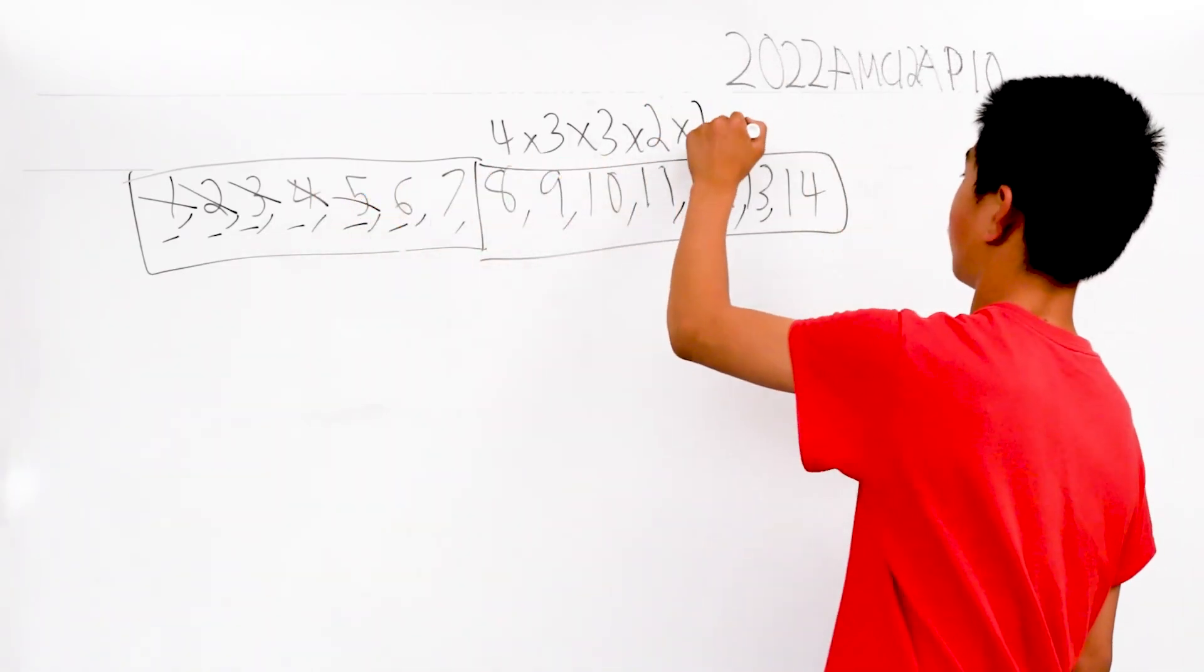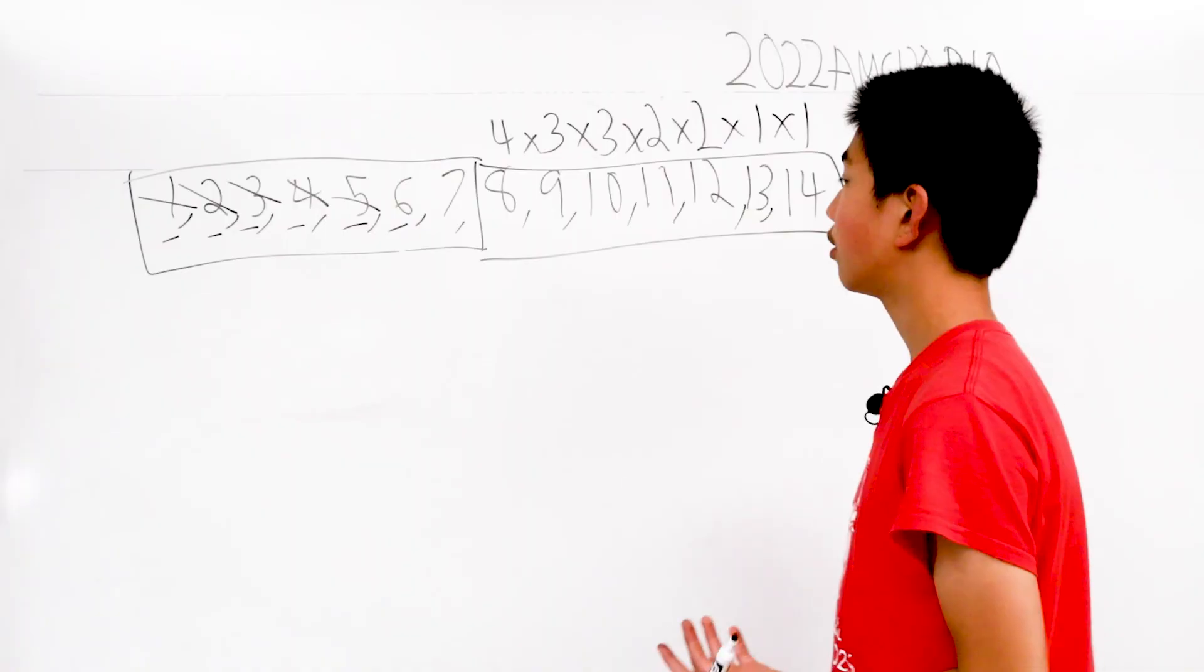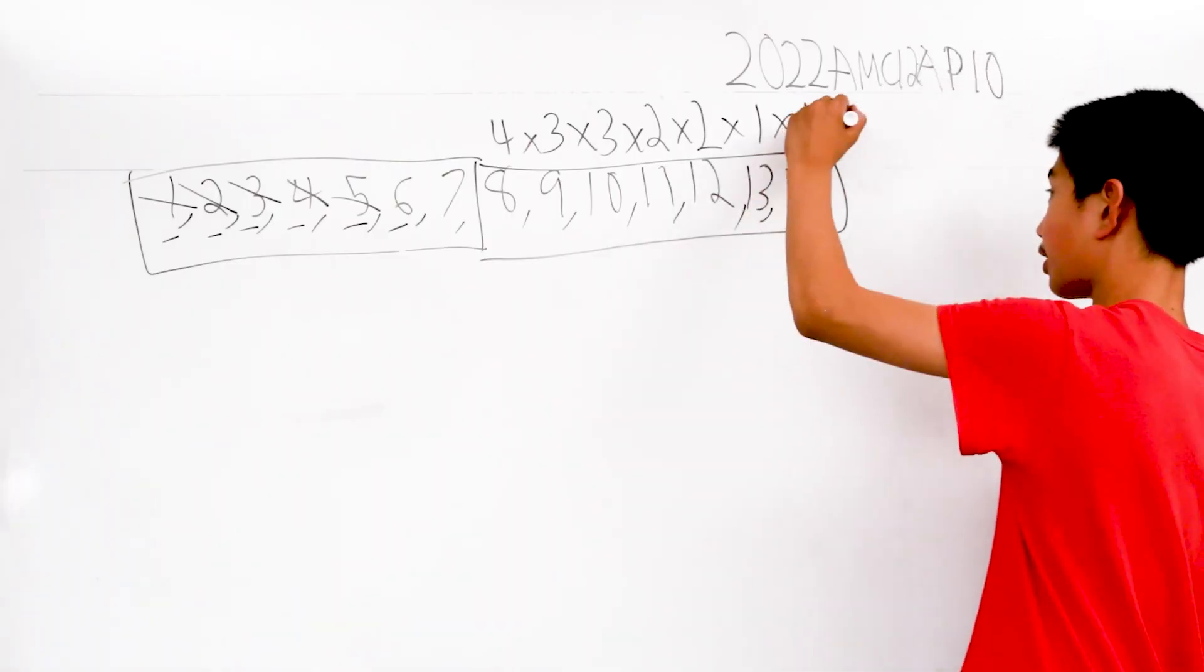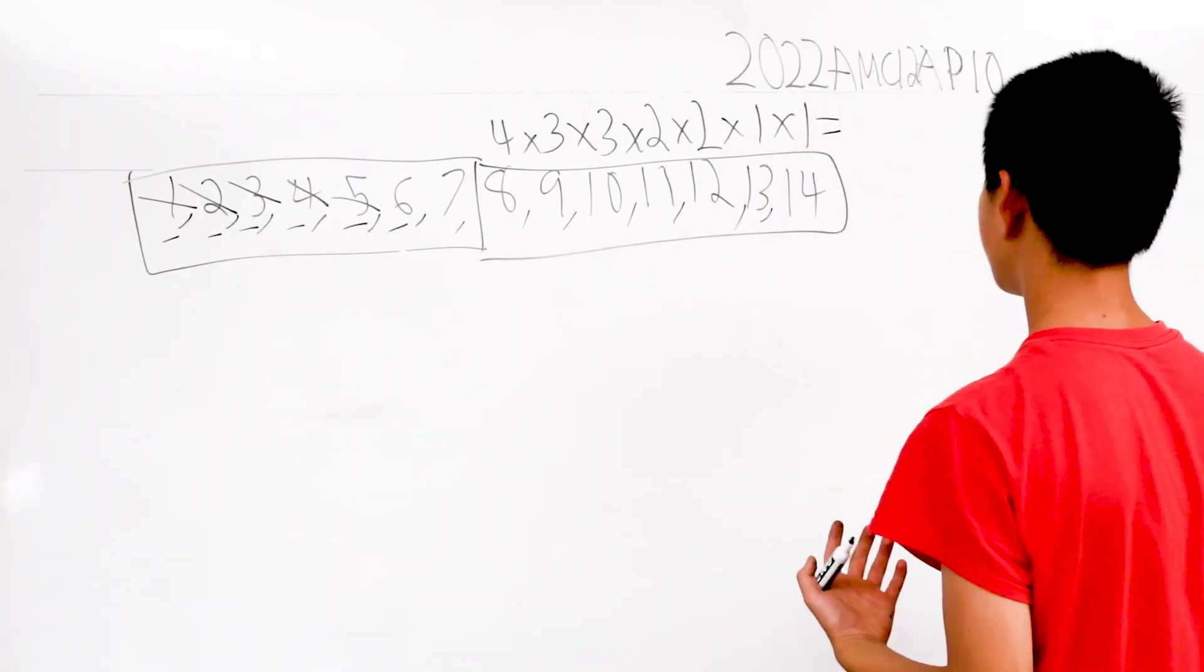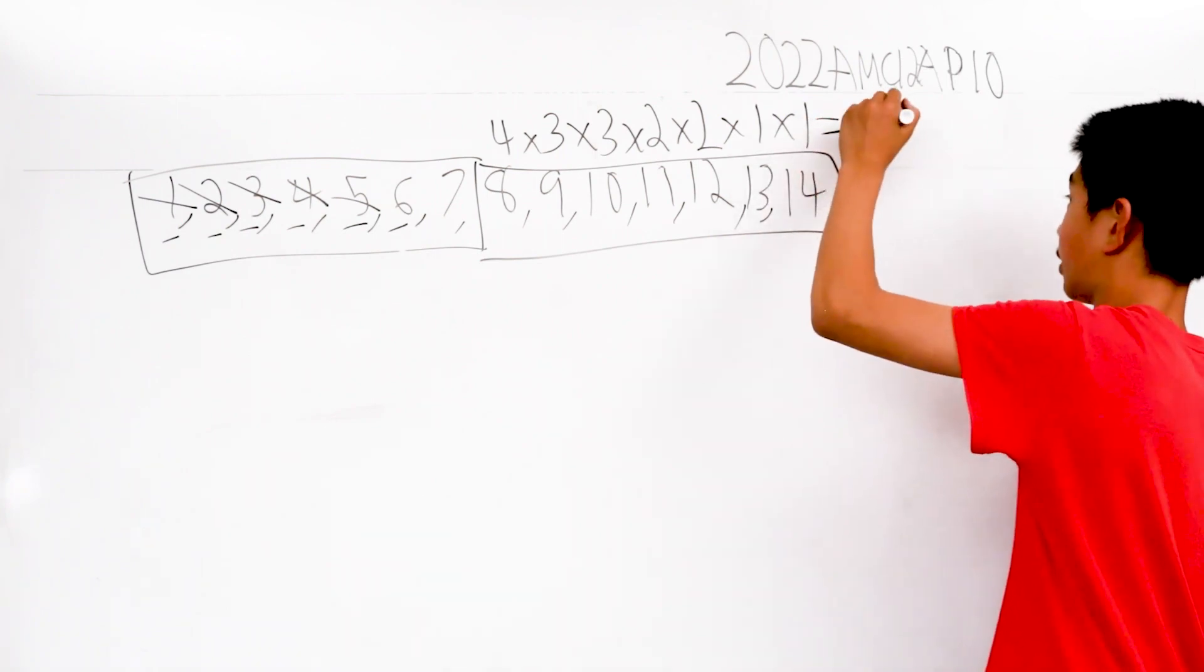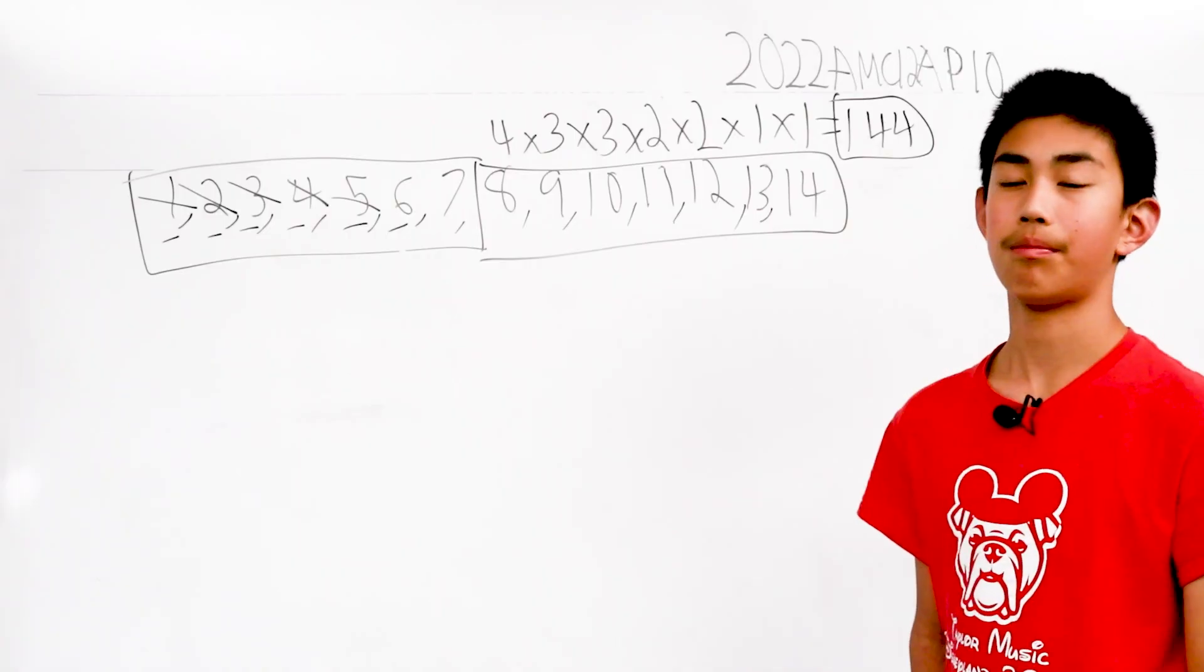If that crosses out, we just have times 1 and times 1 because there is no other way to group these numbers in such a way. We want to find this outcome. And when we multiply all of that together, we can simply get our answer of 144. That is the answer to this problem.